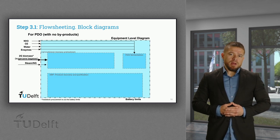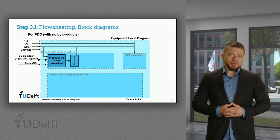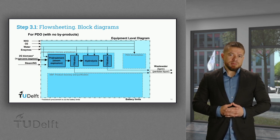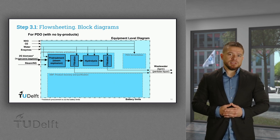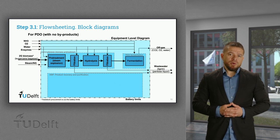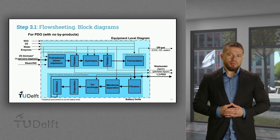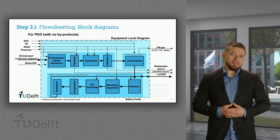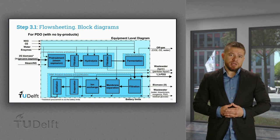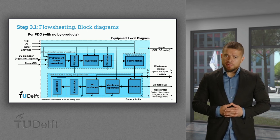Now we can open up each subsection. Biomass is first pretreated through steam explosion, followed by filtration, hydrolysis, and again a filtration step. Then the purified glucose is fermented, and the fermentation broth undergoes a sequence of filtration, membrane separation, ion exchange, evaporation, and distillation to finally obtain PDO, along with the different streams from the downstream process.